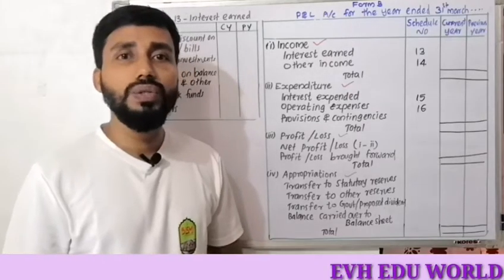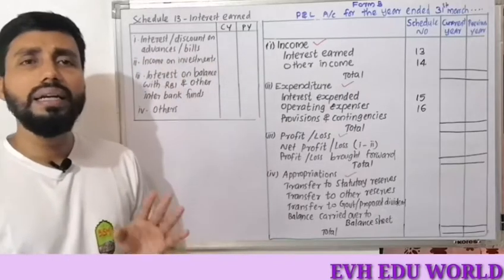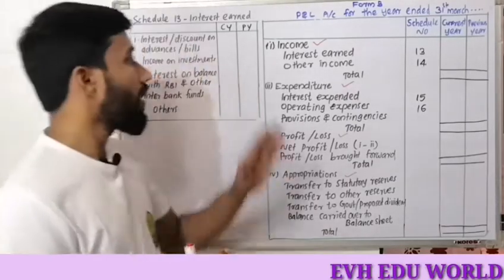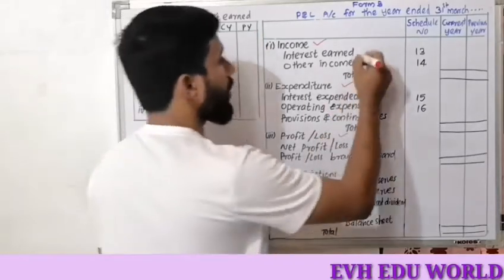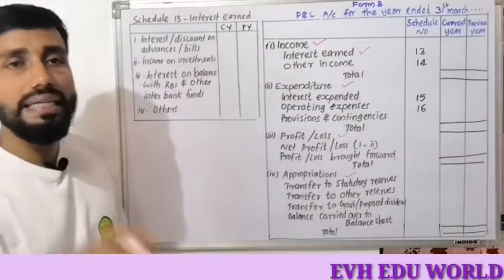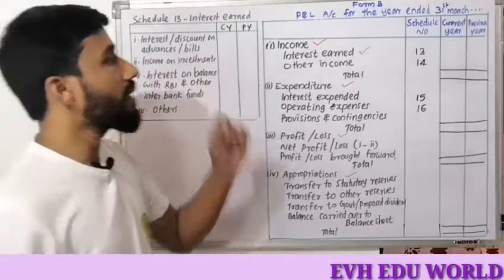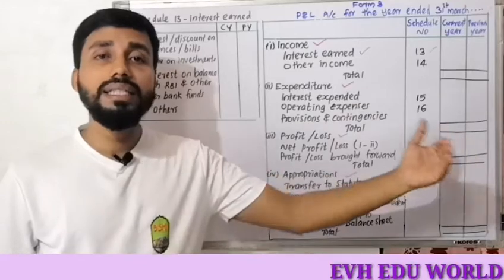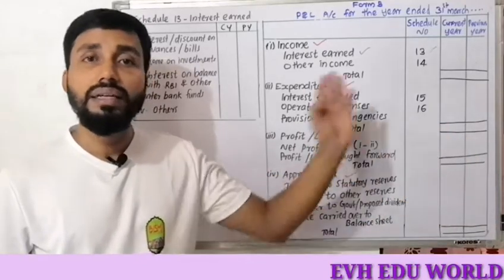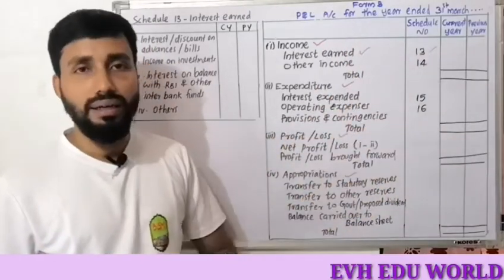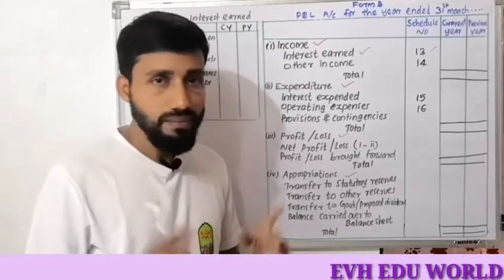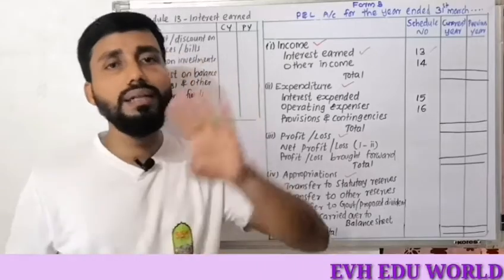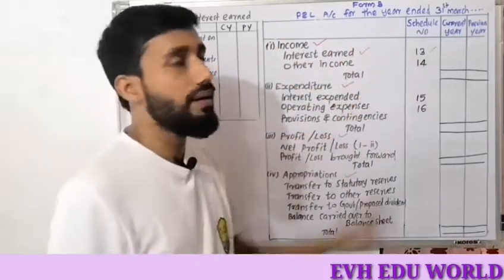When a banking company prepares its final accounts, the four heads are: Income, Expenditure, Profit or Loss, and Appropriations. The first head is Income, and under this the first item is Interest Earned. The schedule numbers 1 to 12 belong to the Balance Sheet. For the Profit and Loss Account, there are 4 schedules numbered 13 to 16. Schedule 13 is for Interest Earned.